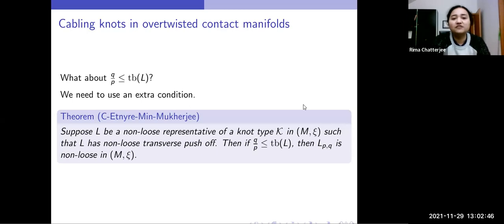So with that extra condition, our second theorem is that if we have a non-loose representative of a knot type such that it has a non-loose transverse push-off, in that case, for the cabling slope less than or equal to the Thurston-Bennequin number, the cable knot is non-loose.